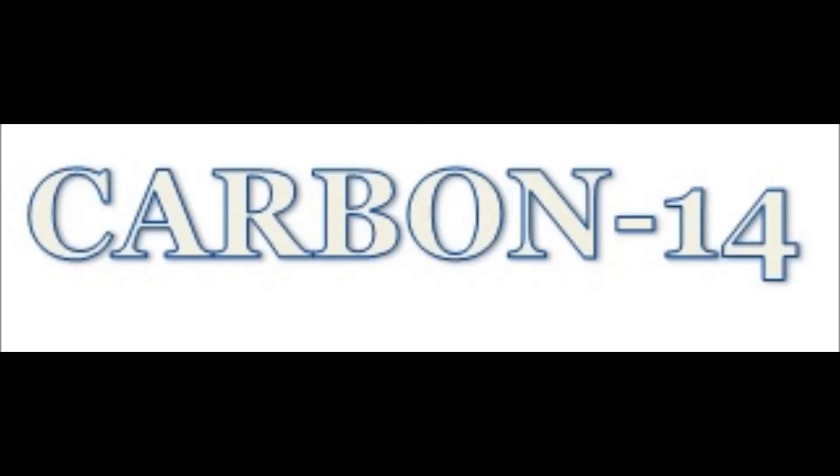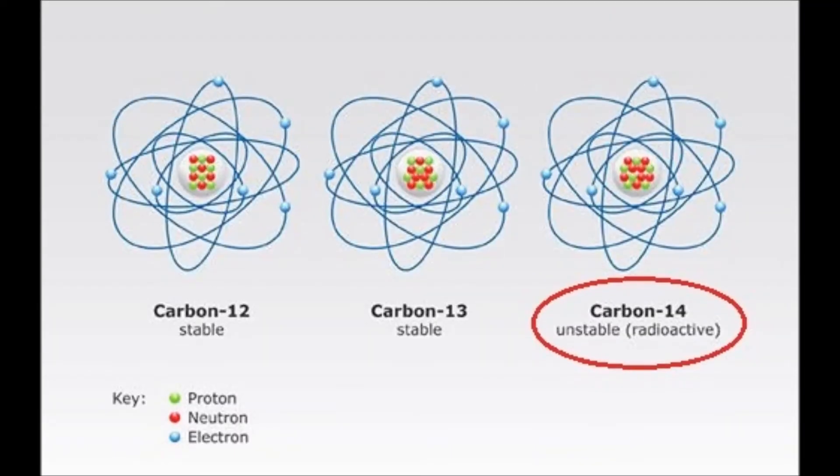An example of a common and naturally occurring radioisotope is carbon-14, containing six protons and eight neutrons. It is one of the few isotopes of the element carbon.